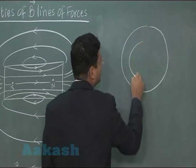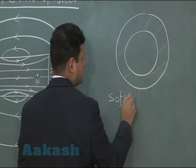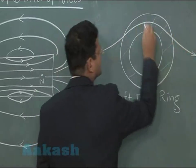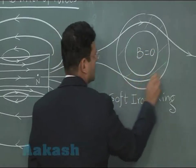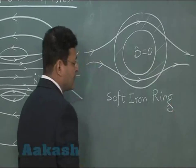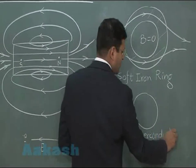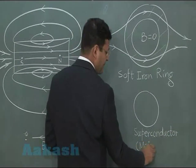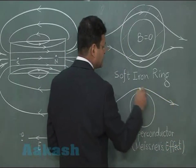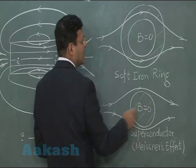If you have a soft iron ring and you keep it in a magnetic field, you will find that inside the ring the magnetic field is zero. Similarly, if you consider a superconductor placed in a magnetic field, magnetic field lines do not prefer to pass through a superconductor — inside a superconductor the magnetic field is zero everywhere.